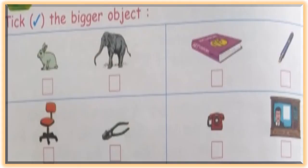Let us try to compare some objects. Take the bigger object. From the first picture, which is bigger object? Rabbit or elephant? Elephant is the bigger object.